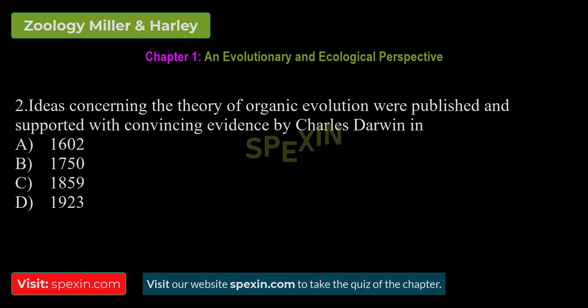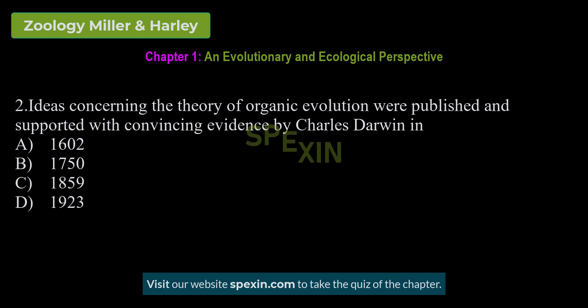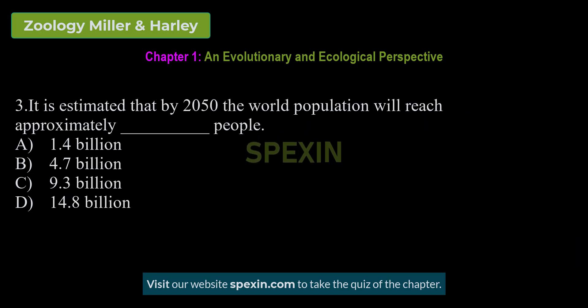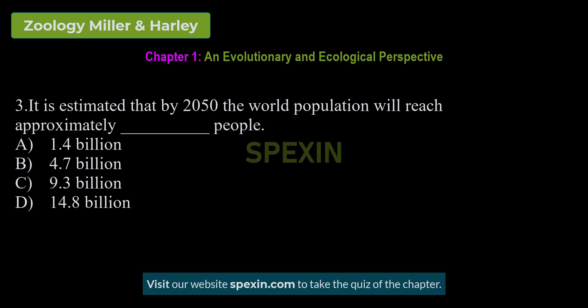Ideas concerning the theory of organic evolution were published and supported with convincing evidence by Charles Darwin in which year? Options: 1602 — 1750 — 1859 — 1923. Correct answer: 1859.